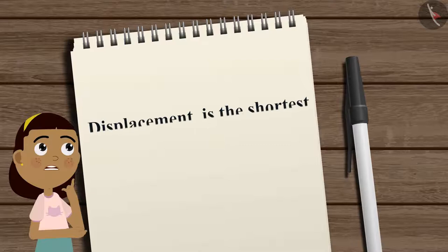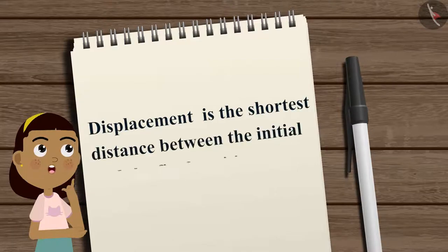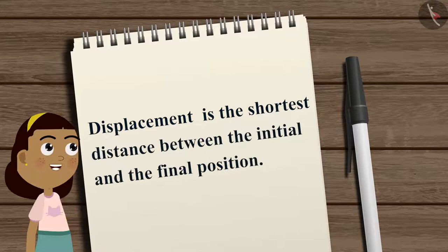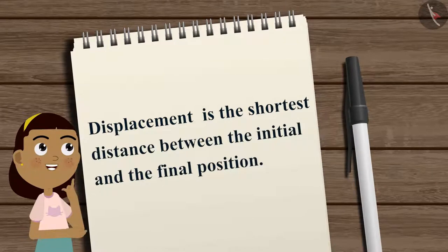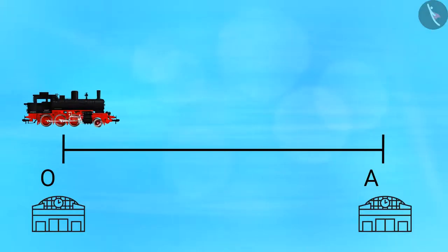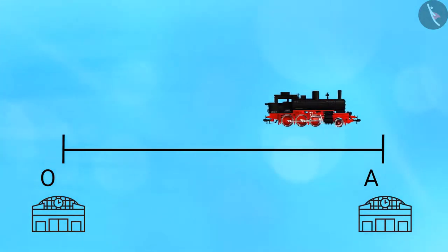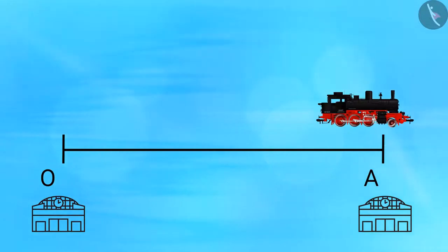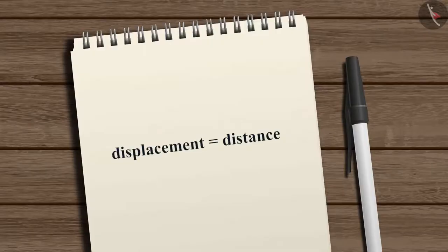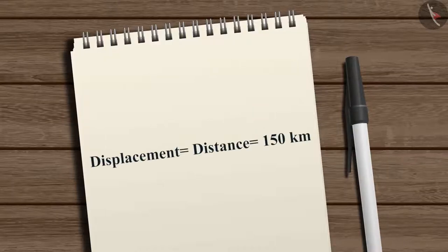For displacement, it is the shortest distance between the initial and the final position. Since the train is moving in a straight line, the displacement is equal to the distance — so the displacement is also equal to 150 kilometers.